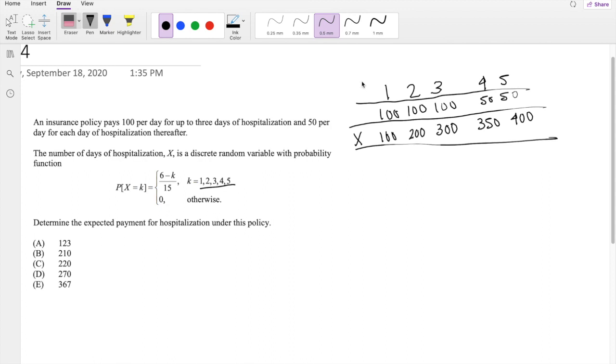This should be K. So this K is the number of days. So the actual amount you're paying is $100, $200, $300, $350, $400.